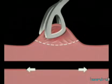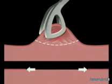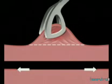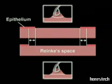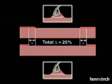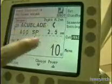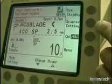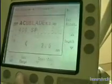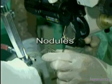The exerted traction stretches Reinke's space and the epithelium surrounding the lesion. A straight-line incision would require an exceedingly extensive resection of adjacent tissues and would needlessly expose Reinke's space and the vocal ligament. The AccuBlade control panel is sufficiently user-friendly to allow quick intraoperative parameter modifications if required.